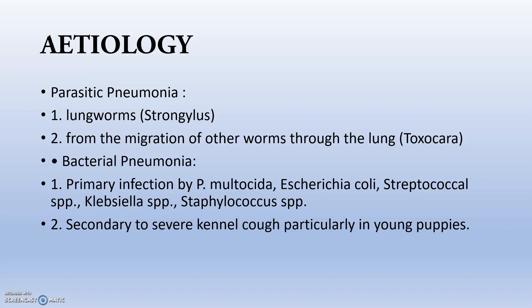Bacterial pneumonia is a very common cause, with primary infections by Pasteurella multocida, Escherichia coli, Streptococcal species, Klebsiella species, and Staphylococcal species. It can also occur secondary to severe kennel cough, particularly in young puppies. Kennel cough is caused by Bordetella bronchiseptica and parainfluenza viruses, affecting the upper respiratory tract and bronchus. Young puppies can even die from kennel cough.